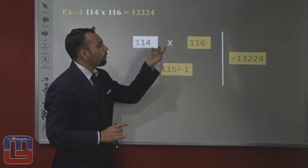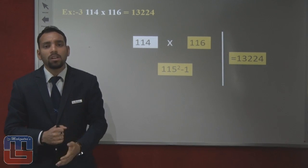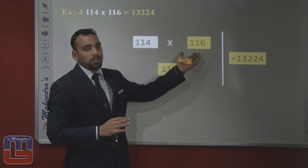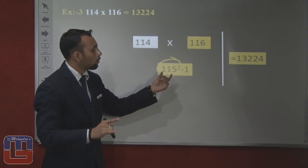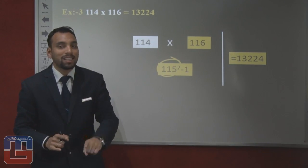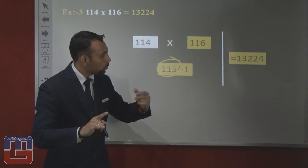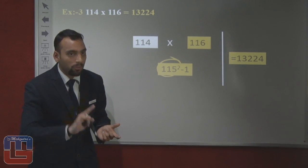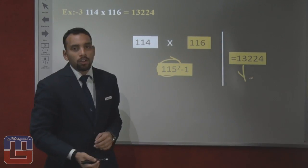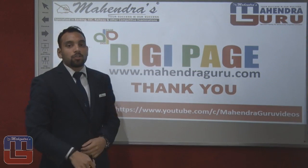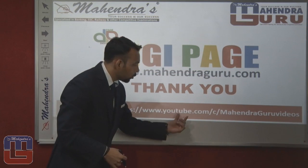One more example: 114 into 116. We have to multiply 114 into 116. The middle number is 115 and we square 115 to get 13225, then minus 1 gives 13224. So the answer is 13224. That is all for today's session. Thanks for watching and you can subscribe at www.youtube.com.